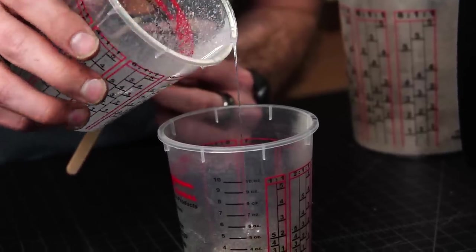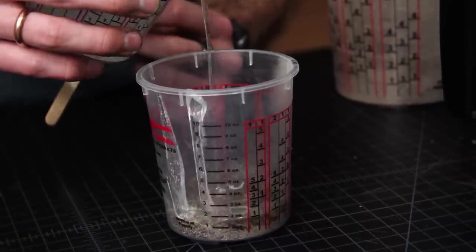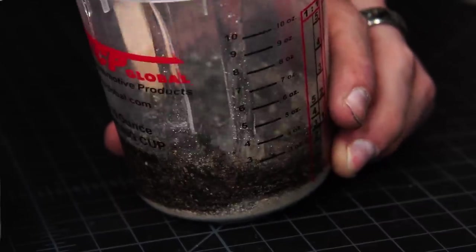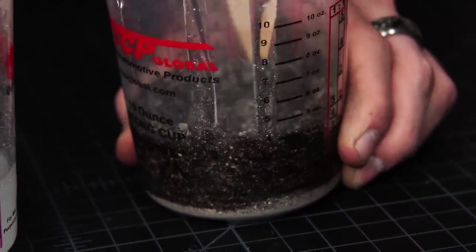So I pour it out and I slowly add it to the point where the dirt gets saturated, but I don't want to do any more than that. I want this ring to be mostly dirt with just enough epoxy to hold it all together.